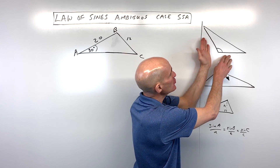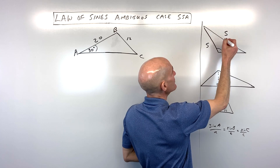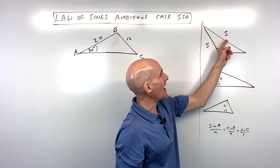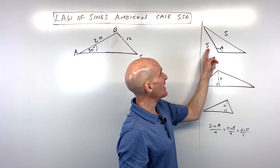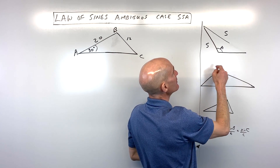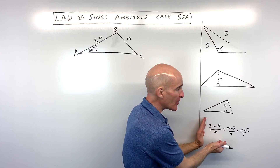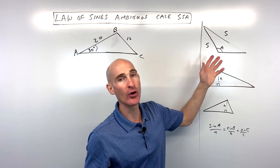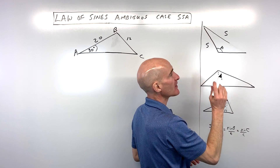When you have an obtuse triangle, the main thing you want to pay attention to is: if they give you this side, this side, and this angle, you want to make sure that the side across from that obtuse angle is the longest side. If this side is longer than the side across from the obtuse angle, it doesn't actually form a triangle — there's no triangle possible.